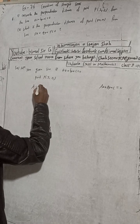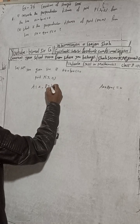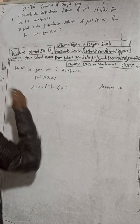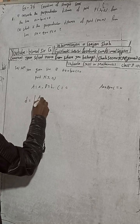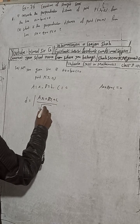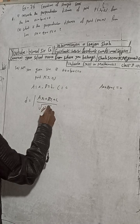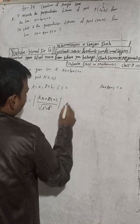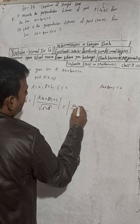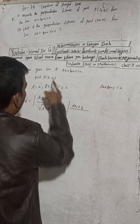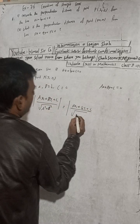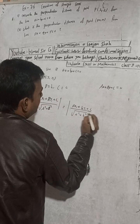Capital A is equal to small a, capital B is equal to small b, and capital C is equal to small c. In this case, the perpendicular distance is given by D equals the absolute value of ax1 plus by1 plus c, divided by root under capital A squared plus B squared. This is the standard formula.